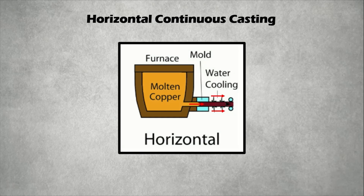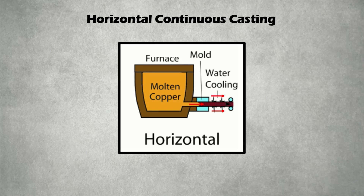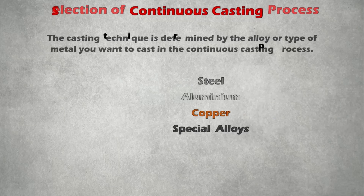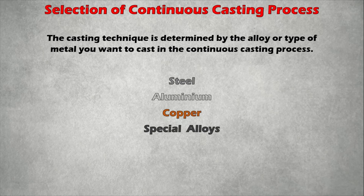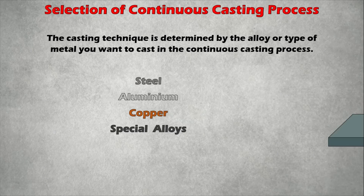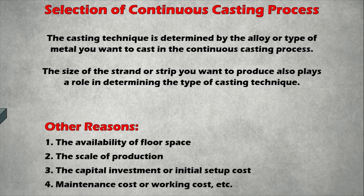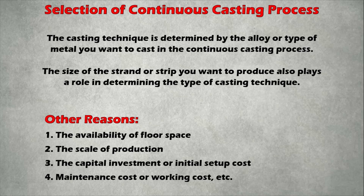In horizontal continuous casting, the system is set horizontally — molten metal is directed in the horizontal direction and output is also obtained horizontally. In strip continuous casting, the output is obtained in the form of strips by applying load on the strand at the rollers. The casting technique is determined by the alloy or type of metal to be cast, and the size of the strand or strip to be produced. Other determining factors include the availability of floor space, scale of production, capital investment or initial setup cost, and maintenance or working cost.